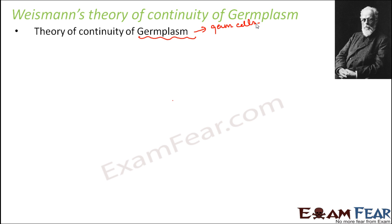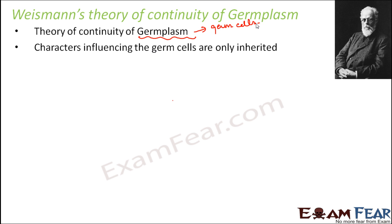Now, what does this theory tell us? It tells us that there is continuity of germplasm, but the somatoplasm is not transmitted to the next generation. Somatoplasm refers to the protoplasm of somatic cells. So you have two types of protoplasm: germplasm and somatoplasm. As per this theory, the somatoplasm — the protoplasm of the body cells — does not get inherited to the next generations; only the germplasm gets inherited.